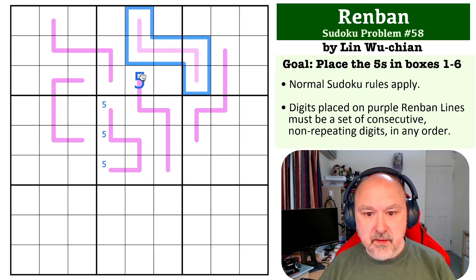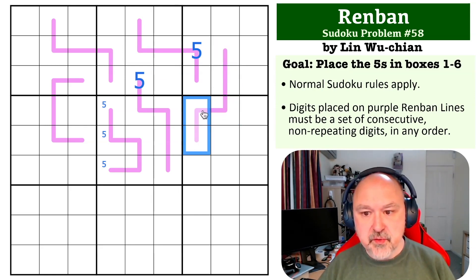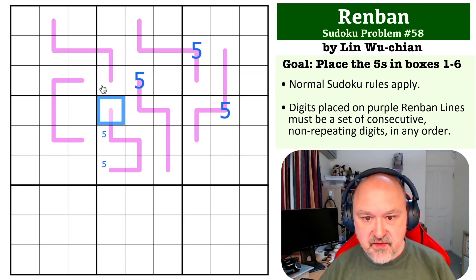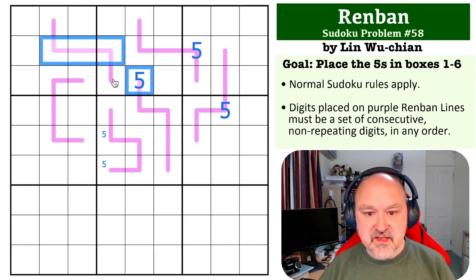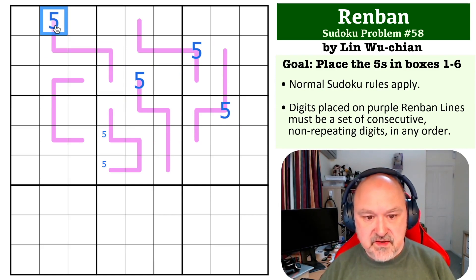Now this is also a five cell long Renban line, but this five sees all of those four cells, so this becomes a five. This five sees on this five cell long Renban line those two in the column and those two in the box, so this becomes a five which knocks out this five. Now on this five cell long Renban line, this five sees all of those, this five sees that one, so this becomes a five.